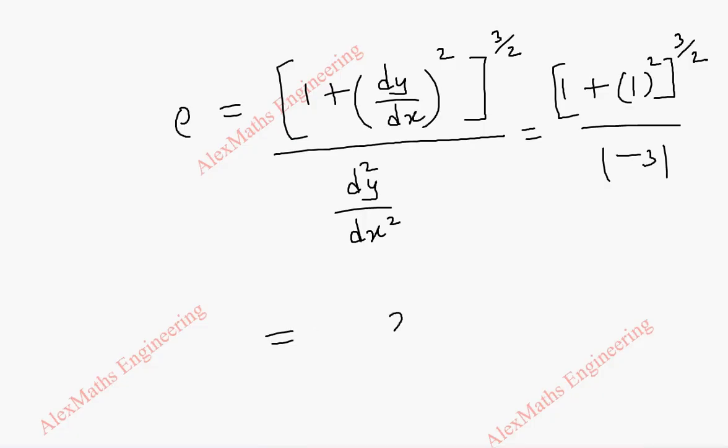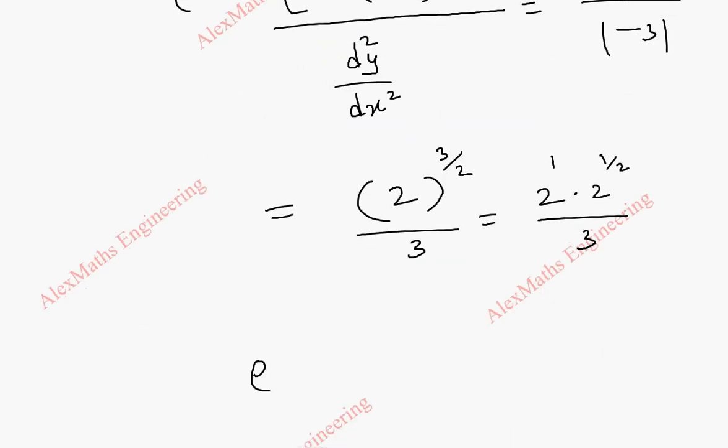So the value of rho is 2 whole power 3 by 2 by 3. Finally, this 2 power 3 by 2 can be written as 2 into 2 power half. This 3 by 2 is 1 plus half. So we split like this. So finally, we get the radius of curvature rho as 2 root 2 by 3. So this is our required radius of curvature.